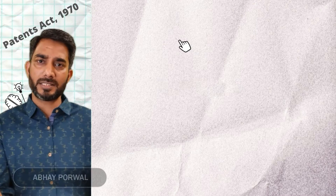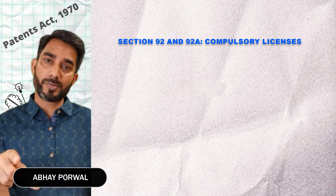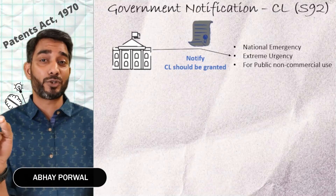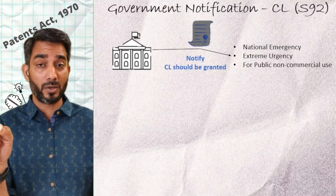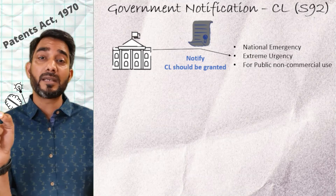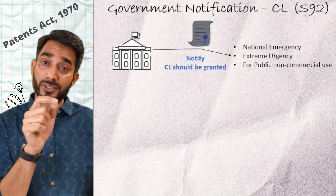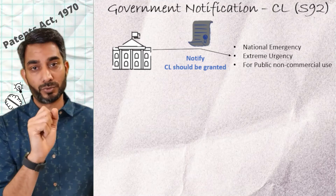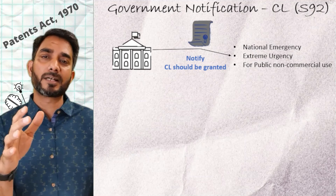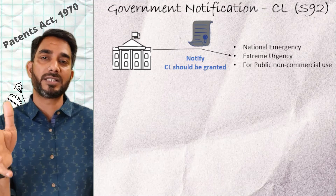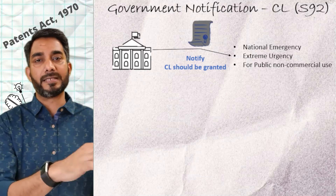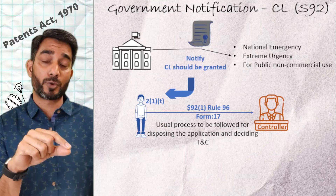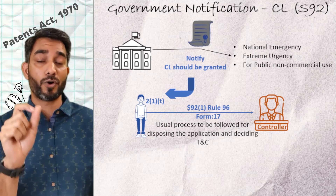There could be a case where the central government on their own may decide that a compulsory license (CL) should be granted for a particular patent, keeping in mind the national emergency, extreme urgency, or public non-commercial use of the invention. In such cases, the central government may notify that a CL would be granted for a patent, and accordingly, a person interested may approach the controller to obtain a CL for this particular patent.